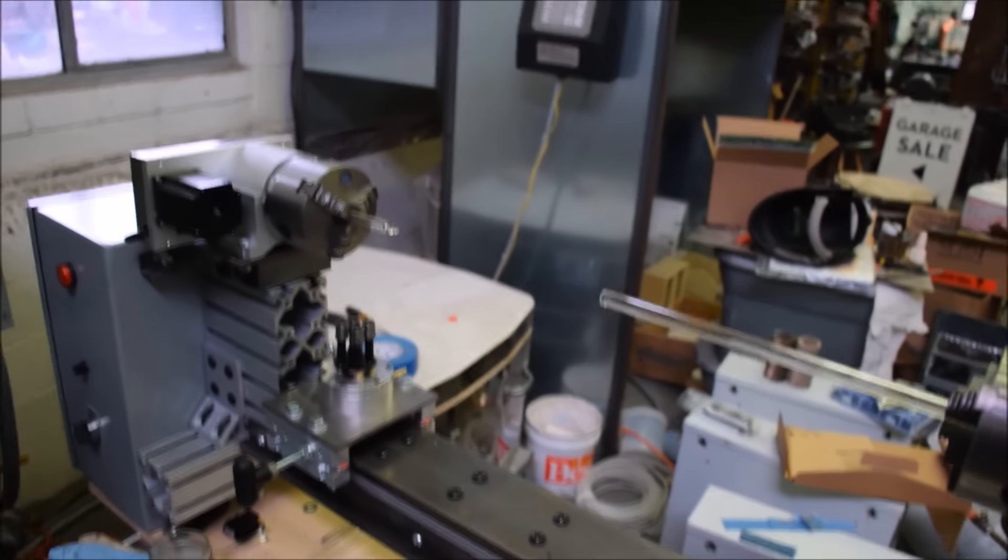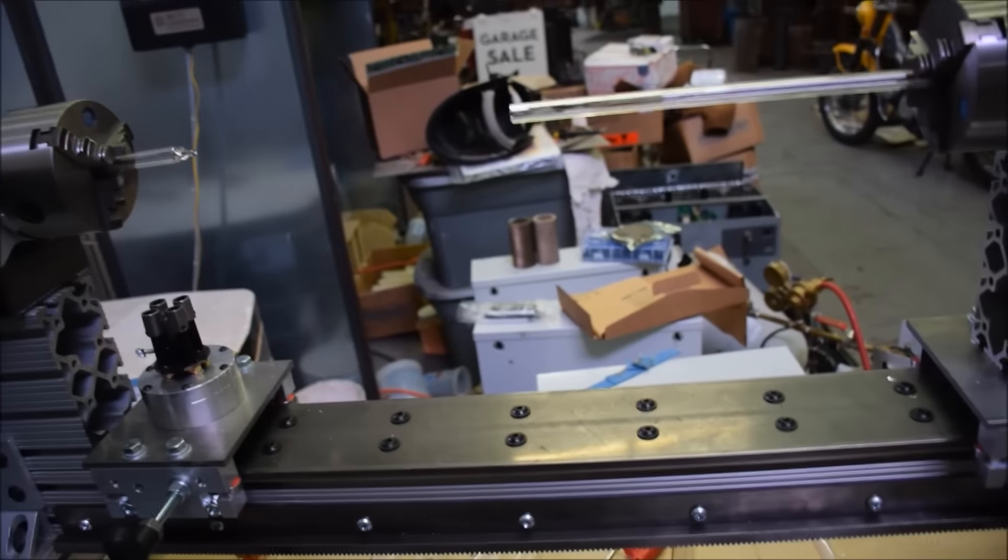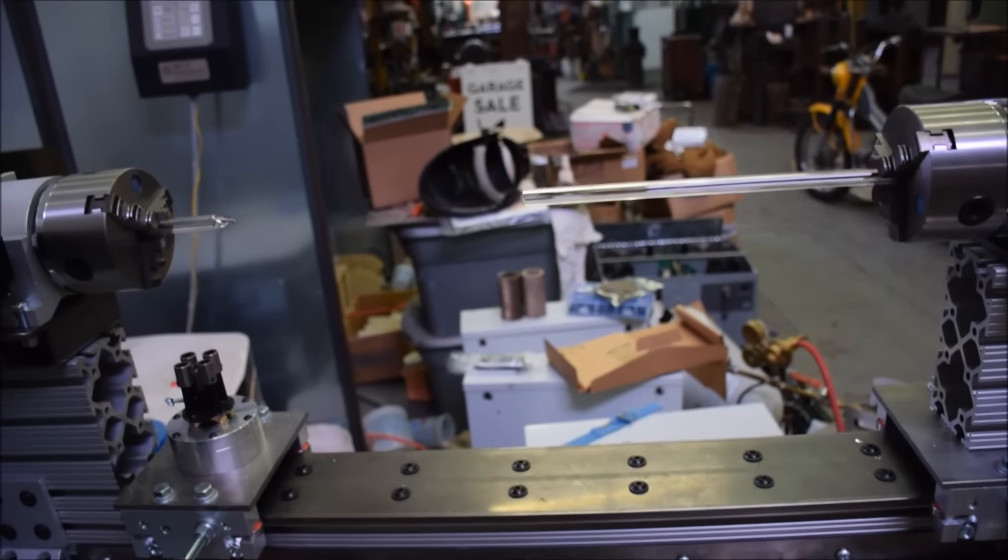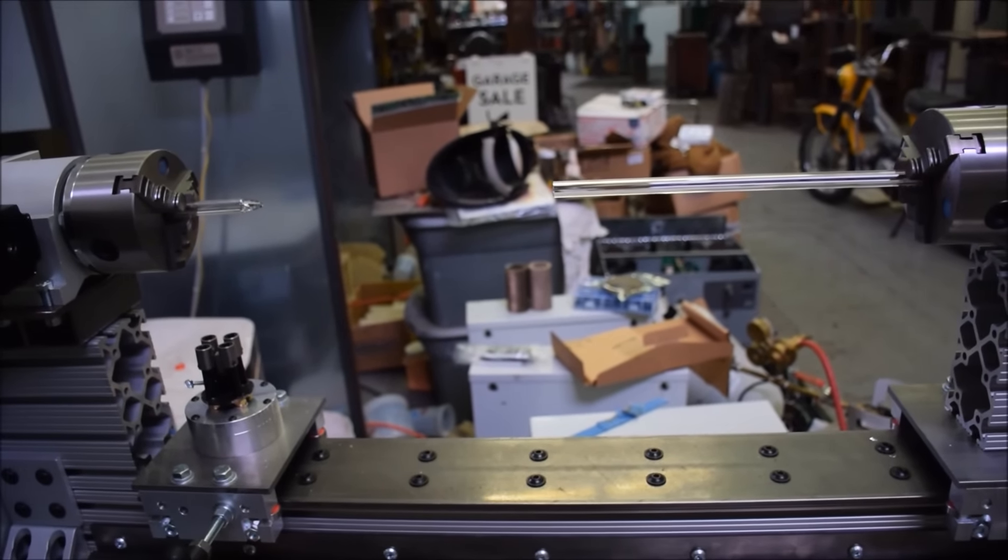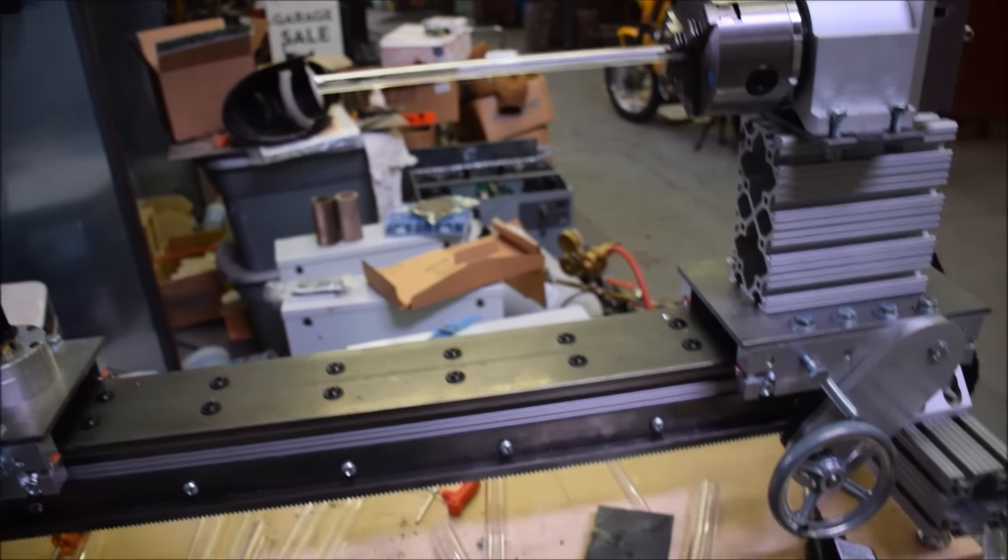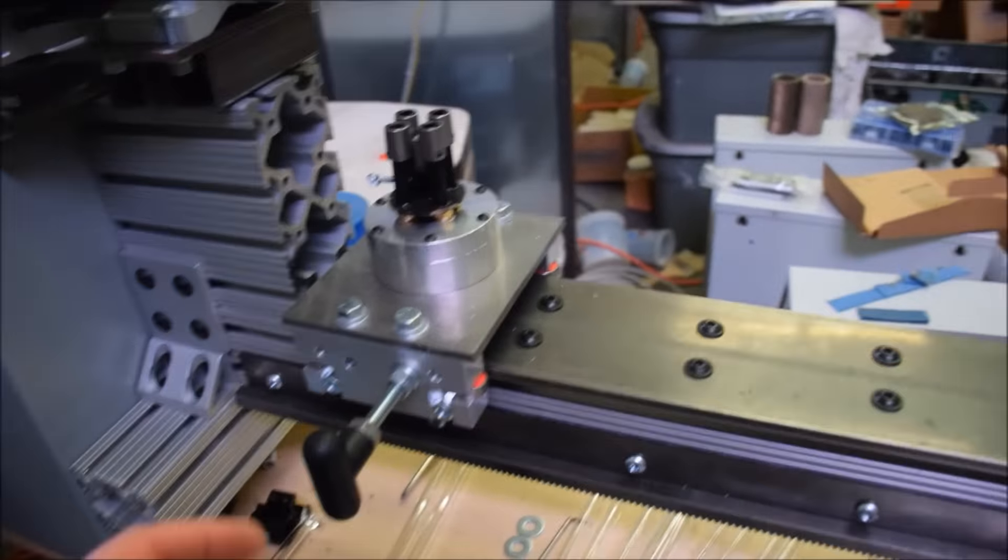Nine and three quarter inch radial swing, which is a little bit more than some of the domestic lathes, or even imported lathes for this size, certainly. Cold rolled steel bed, or ways, rather.